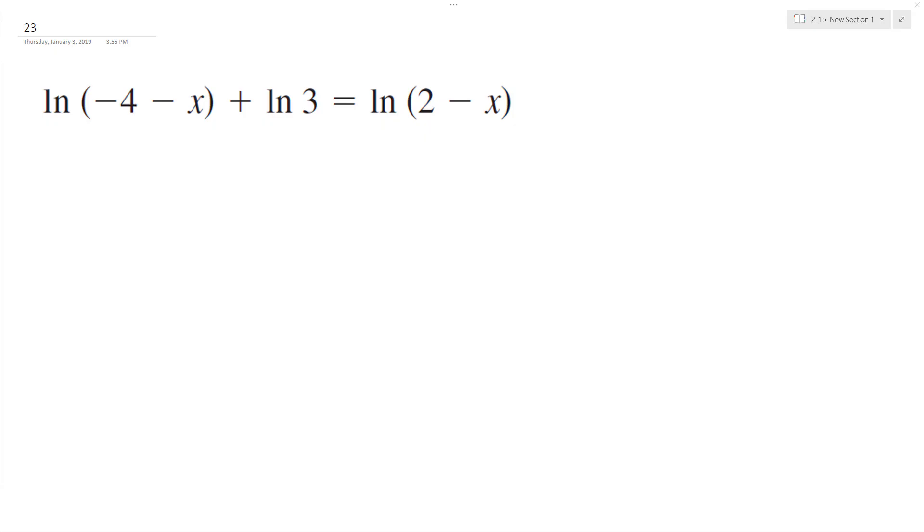Let's solve the following problem. First thing we need to do is combine the logarithms. So when we combine natural log of negative 4 minus x plus natural log of 3, it's the same thing as multiplying these two.